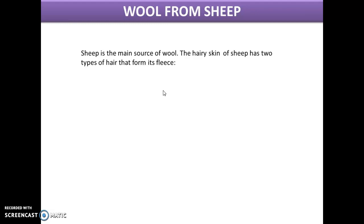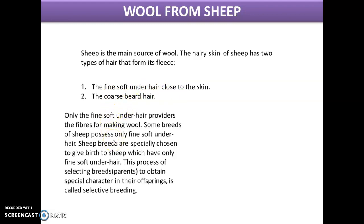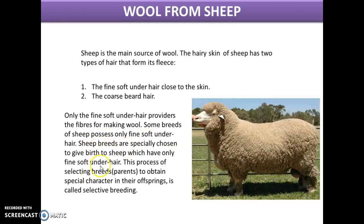Sheep is the main source of wool. The hairy skin of sheep, called the fleece, has two types of hair: fine soft under-hair which is closer to the skin, and coarse beard hair. Only the fine soft under-hair provides the fiber for making wool. Some breeds are specially chosen through selective breeding — the process of selecting breeds to obtain special characters in their offspring.